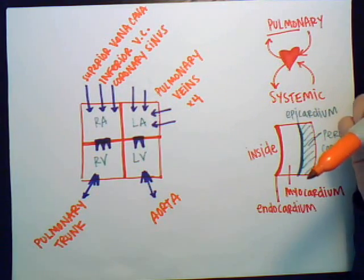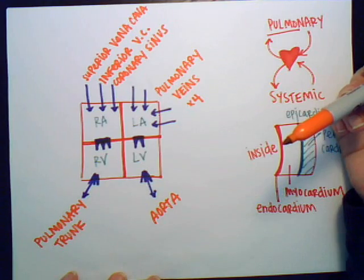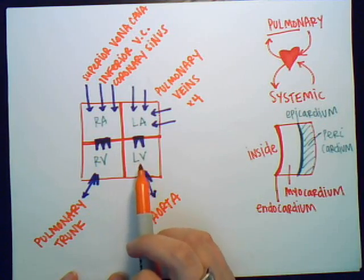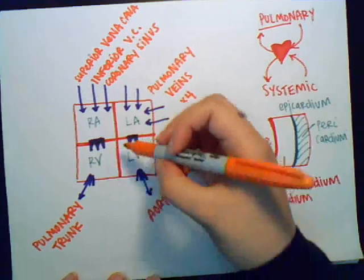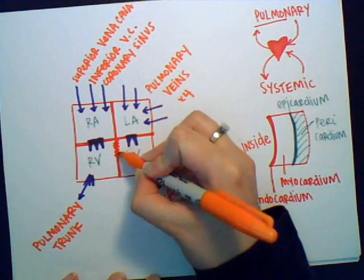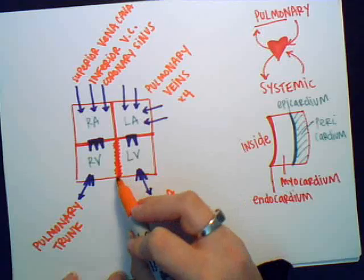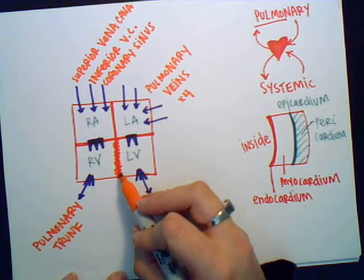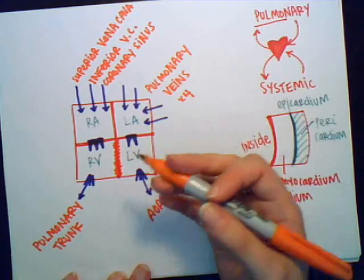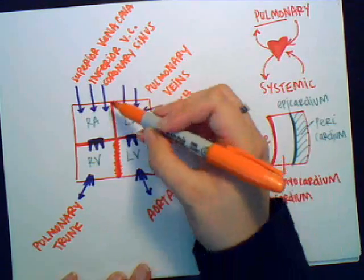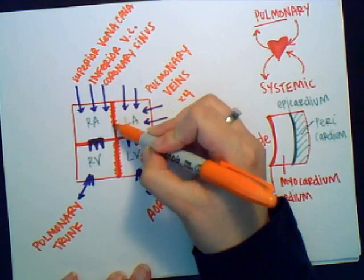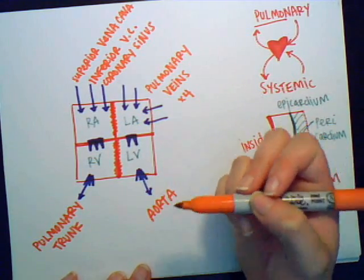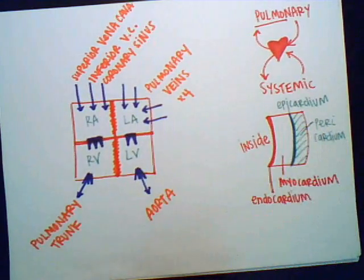One more structure to note: the wall separating the two ventricles is called the interventricular septum — 'interventricular' meaning between the ventricles. The wall separating the two atria is called the interatrial septum.